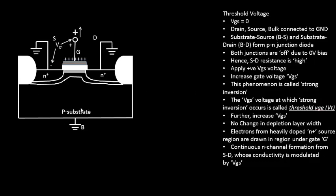Strong inversion or surface inversion was nothing but under a p-type substrate there is a small n-type area or n-type channel formation — that is what was referred to as strong inversion — and the potential at which strong inversion happened was called as Threshold Voltage.